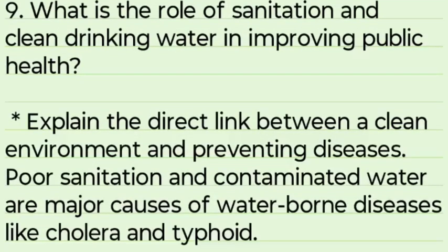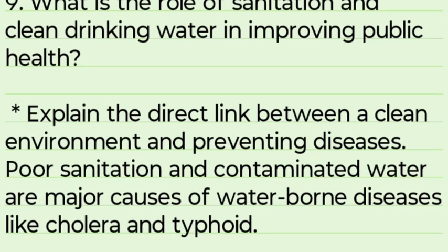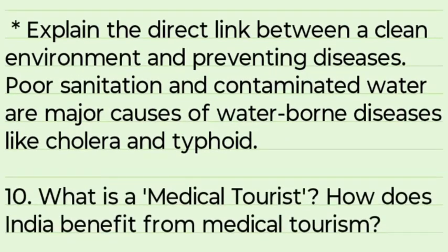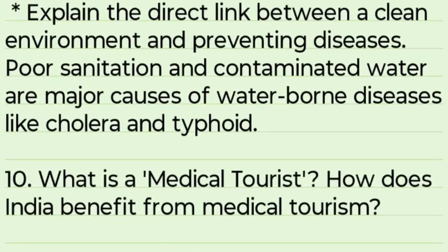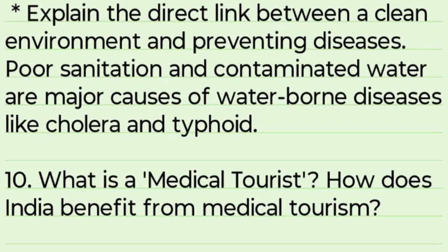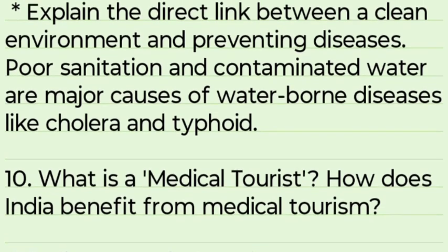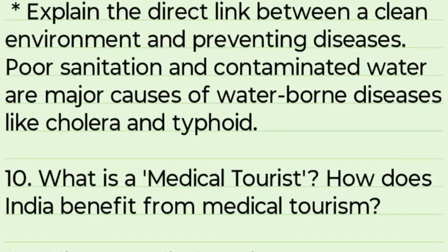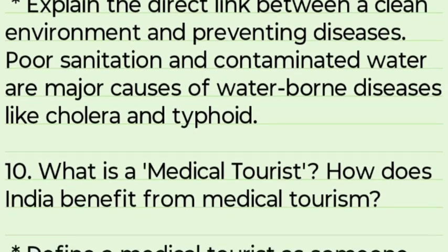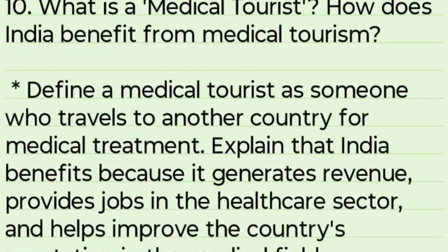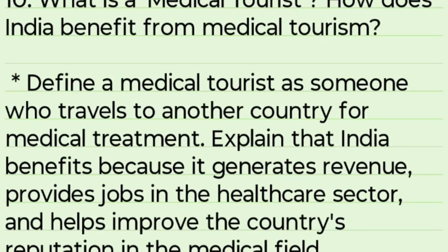What is the role of sanitation and clean water in improving public health? Explain the direct link between a clean environment and preventing diseases. Poor sanitation and contaminated water are major causes of water-borne diseases like cholera and typhoid.